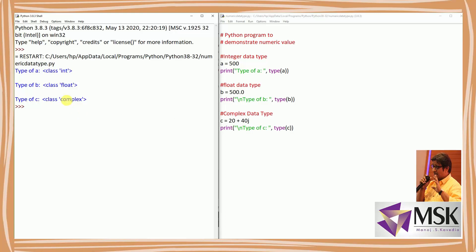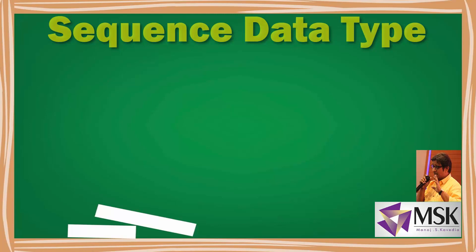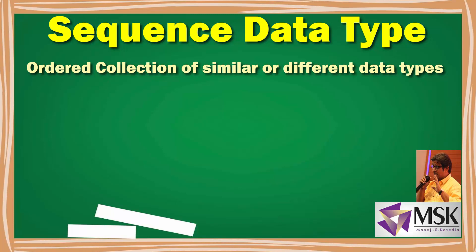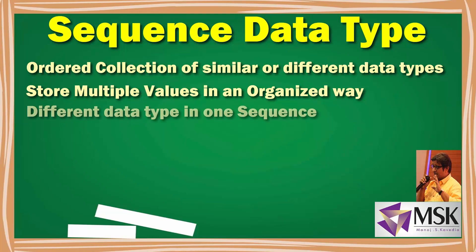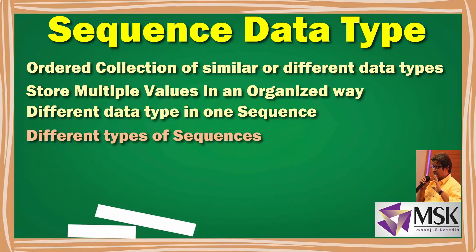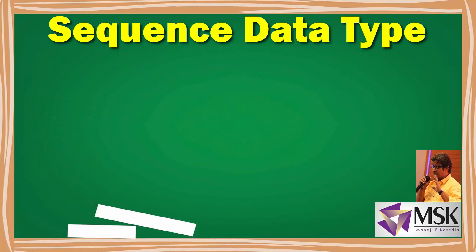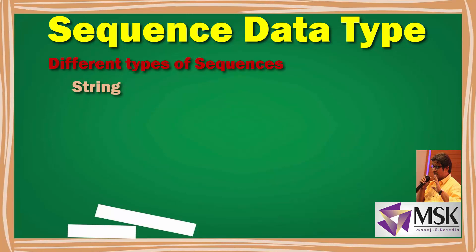Now let's look at sequence data types. In Python, sequences are ordered collections of similar or different data types. Sequences allow you to store multiple values in an organized way. There are several types of sequences: string, list, and tuple. In this video I am just introducing these — I will explain each in detail in further videos.